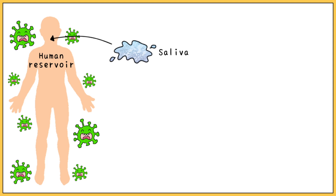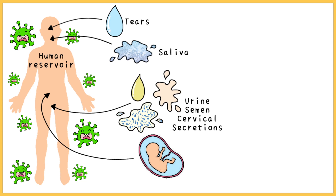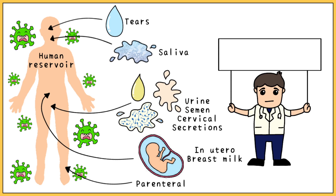It could spread through the saliva, urine, semen, cervical secretions, tears, through intrauterine transmission, breast milk, or parenterally. It is important to remember that most individuals carrying the virus are asymptomatic, which makes it easily transmissible and difficult to diagnose.